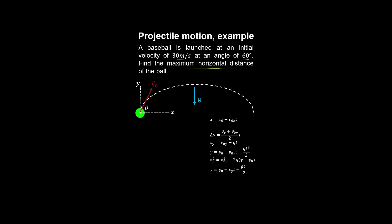Choosing our coordinate system with the origin at the initial position of the ball and the positive directions as shown, we want to find the range of the projectile, so x equals r. There is only one kinematic equation in the horizontal direction: r is equal to the horizontal component of velocity multiplied by time. We resolve the velocity into vertical and horizontal components using trigonometry.